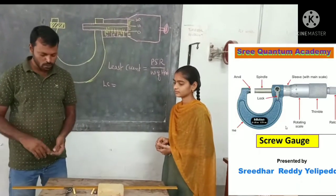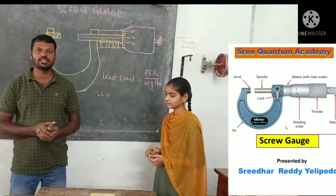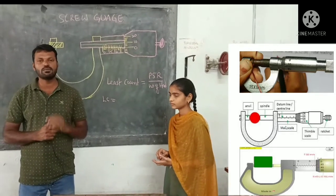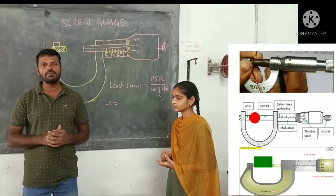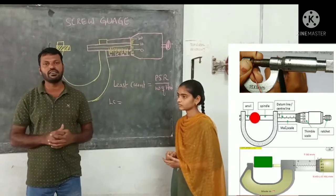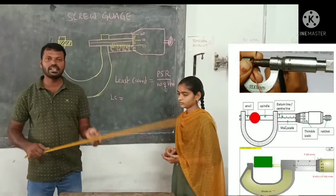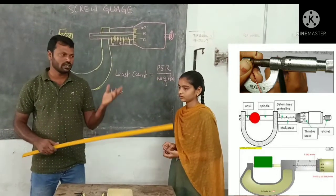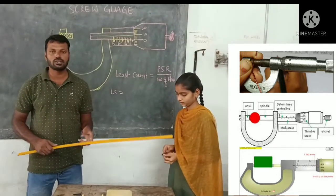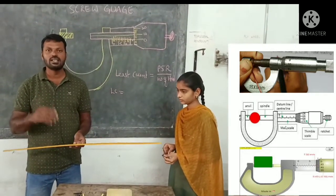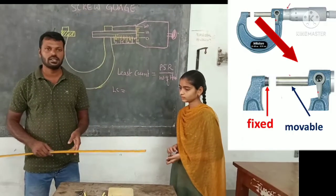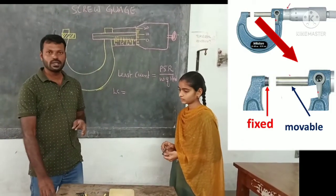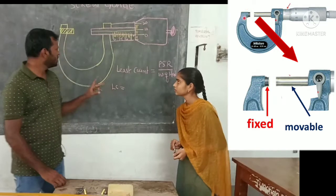Next, screw gauge. How to use screw gauge. Screw gauge is helpful to find the radius of small metal bulbs or radius of a wire or thickness of a meter scale. Most of the times in all the experiments we use screw gauge as a supporting apparatus. So let us discuss how to use screw gauge.